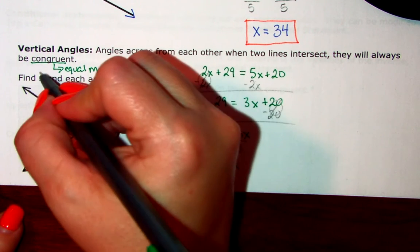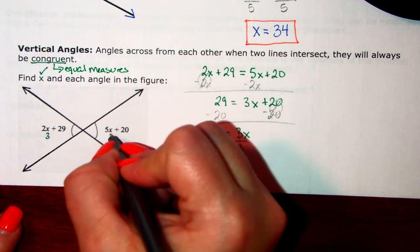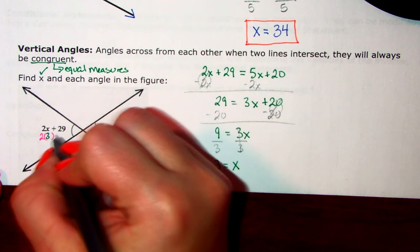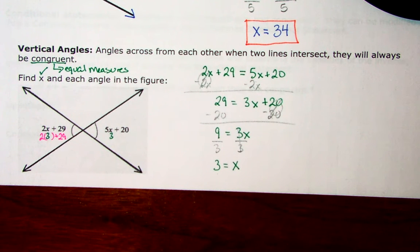And so, we found x. It also wants me to find each angle in the picture, so I'm going to substitute a 3 in for x so I can find each of those angles. I'm going to say 2 times 3 plus 29, 2 times 3 is 6, and 6 plus 29 is 35.